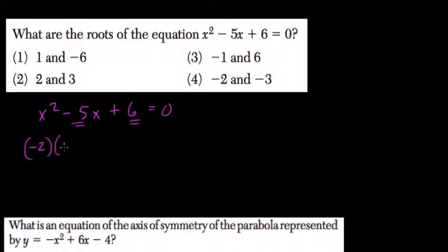Well, don't forget that negative 2 times negative 3, that equals positive 6. And if we add negative 2 and negative 3, we get negative 5.